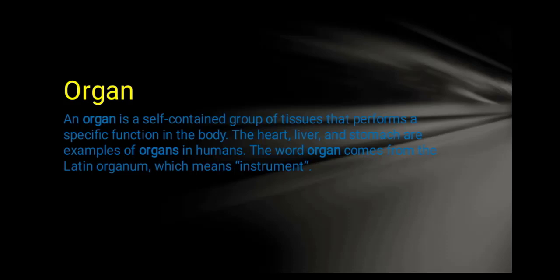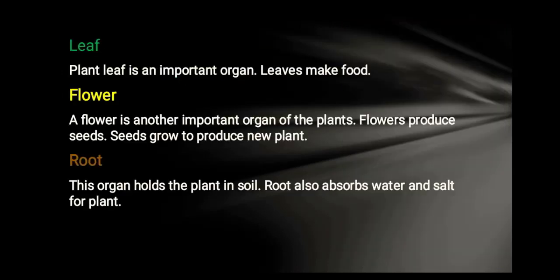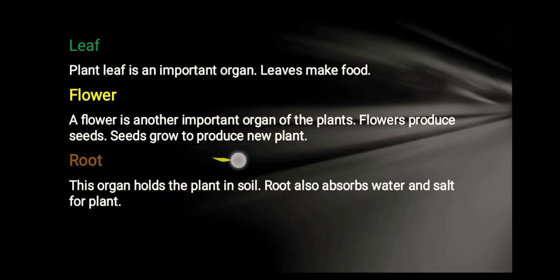The organs in the plant body are the leaf, flower, and roots. These are the basic organs of a plant. The leaf is an important organ responsible for making food — we call it the food factory. The flower is another important organ in the plant. Flowers produce seeds, and seeds grow to produce new plants.